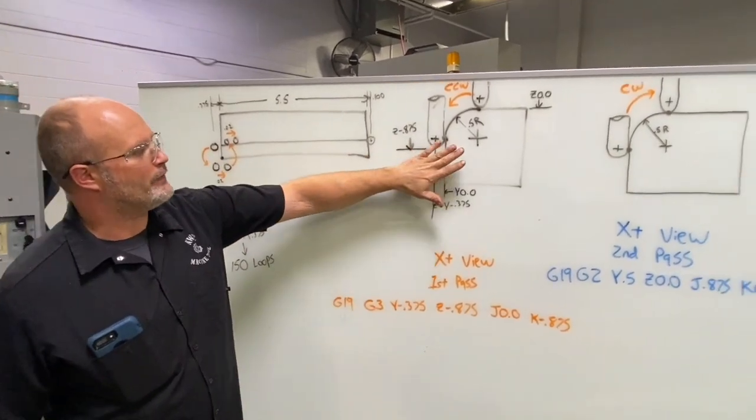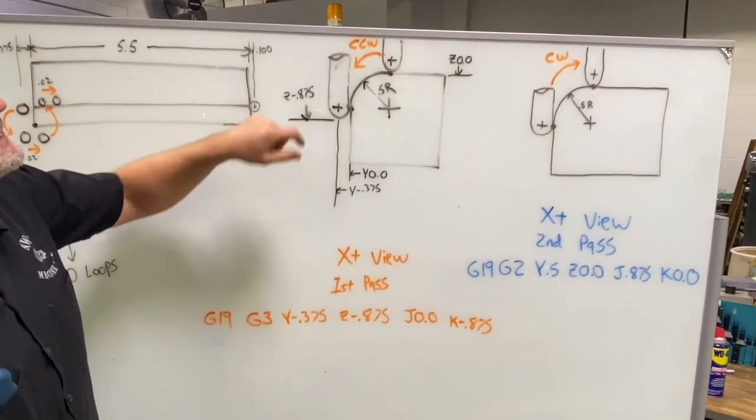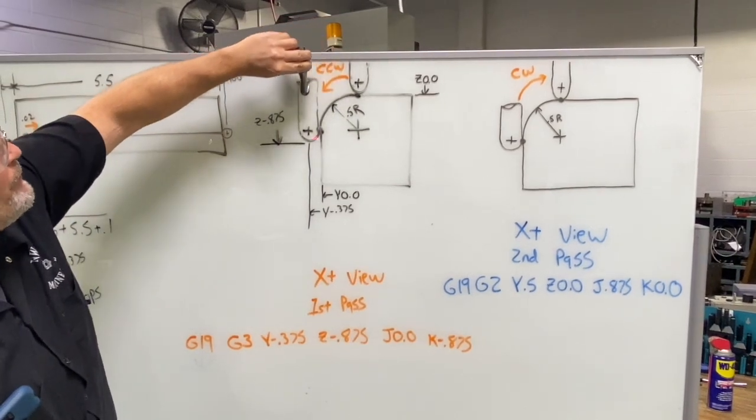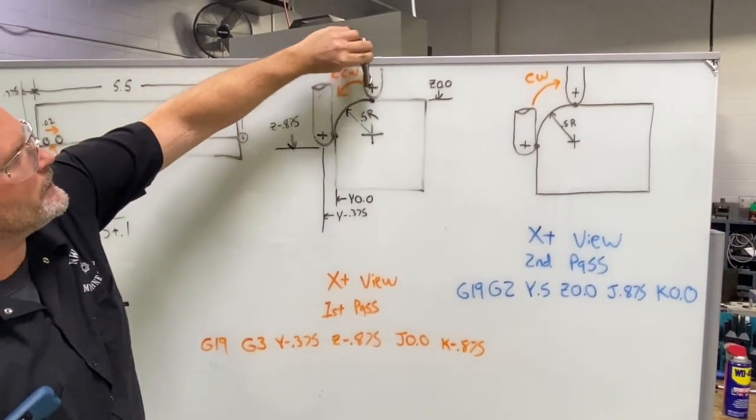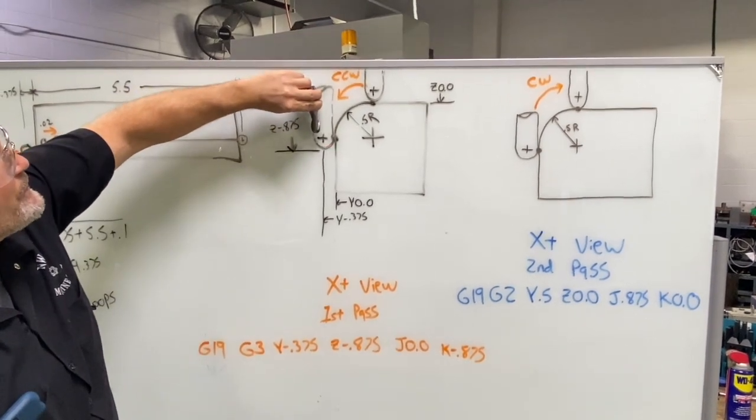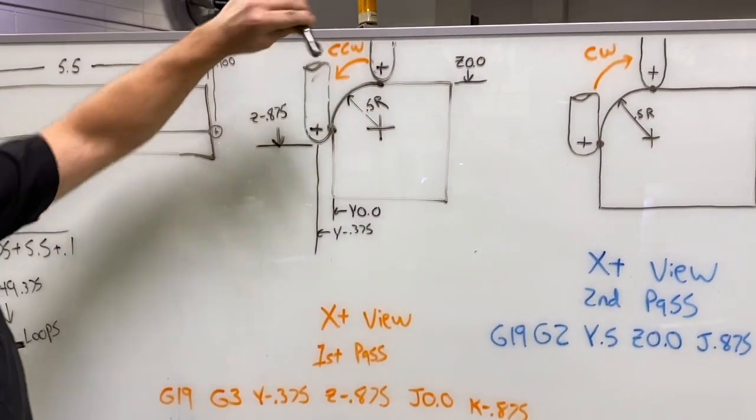Just an end view of the part looking at our X positive direction down the part, and essentially what we're going to be doing is taking our ball nose end mill and interpolating that radius along the corner of that part. So we're going to be doing a radius move in this direction and we're going to step over, do a radius move in the opposite direction.